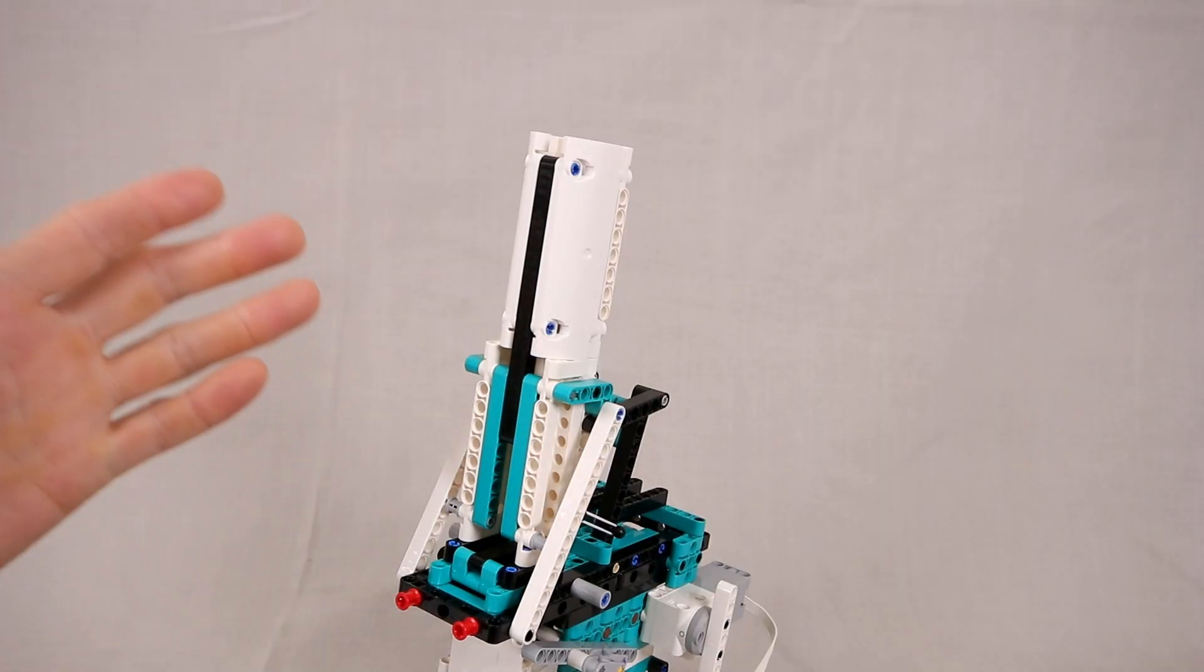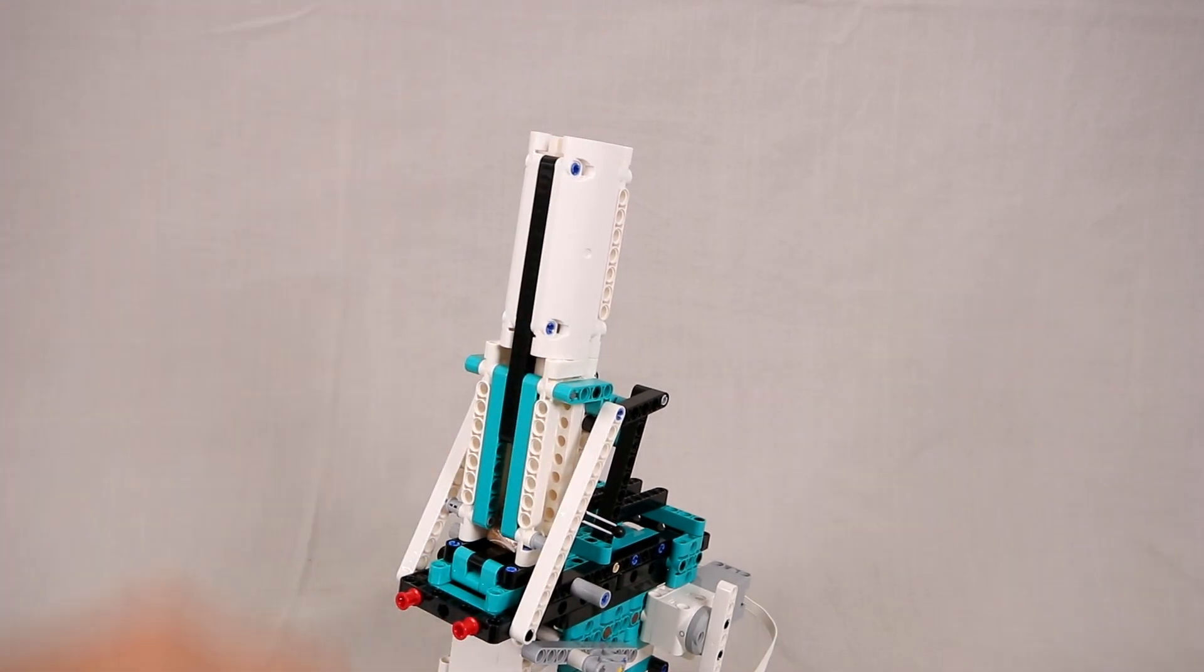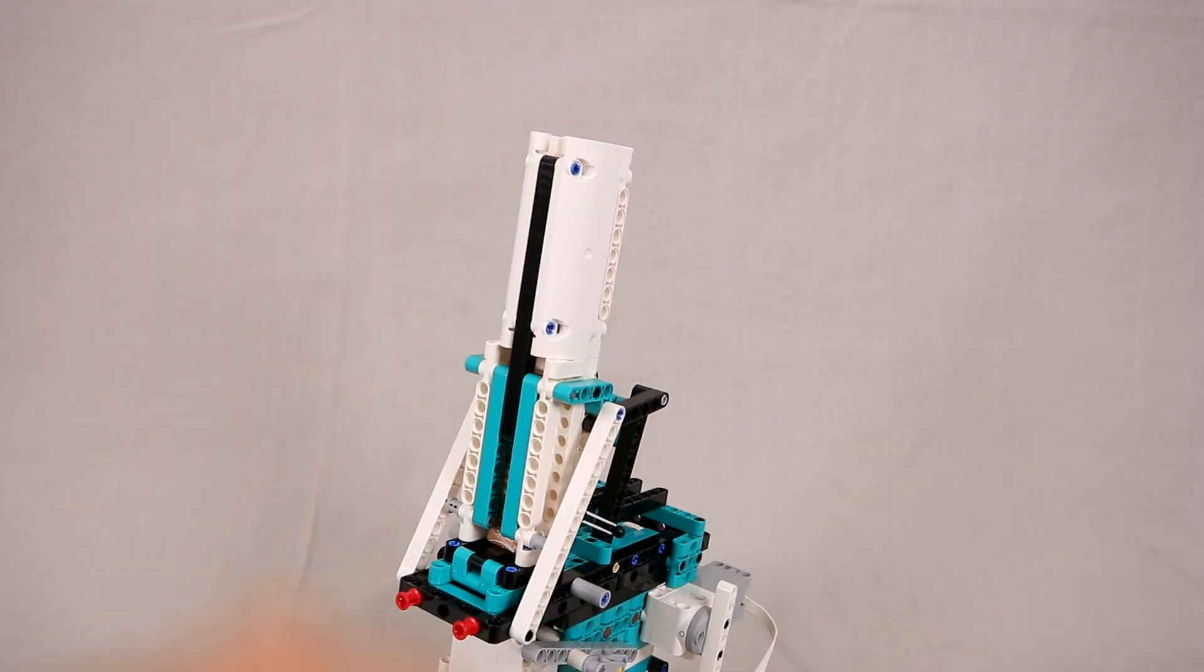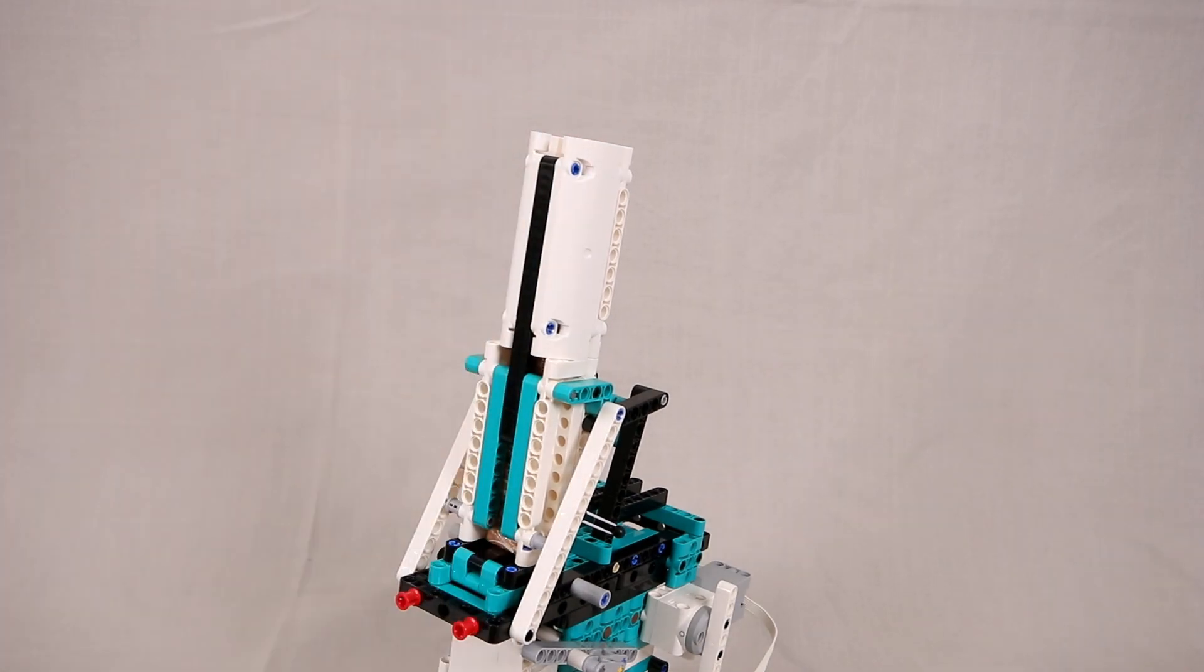Conceptually this year's launcher is quite simple. We have this gravity-fed magazine at the top which holds the caramels and we can just drop them in from the top. Currently it holds nine caramels but it can actually be pretty easily extended to hold more.